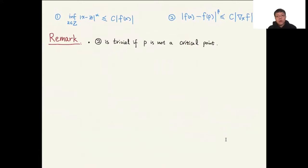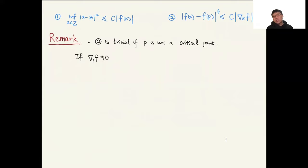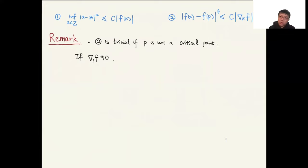Let me give a remark. The second Łojasiewicz Inequality is trivial if p is not a critical point — the only interesting case is when p is a critical point. Let me briefly explain why. If the gradient of f at p is nonzero, namely p is not a critical point, then even if the function is only C¹ — meaning the derivative is continuous — we can still show the second Łojasiewicz Inequality.